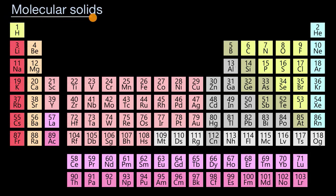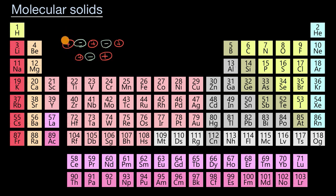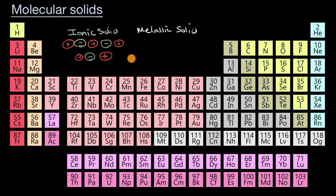Let's talk about molecular solids. As a quick review, we've talked about ionic solids, where ions form lattices — positive ions and negative ions attracted to each other, forming a three-dimensional lattice. We've also seen metallic solids, where metals contribute valence electrons to a sea of electrons, leaving positive cations in that electron sea. Those have properties like good electrical conductivity and malleability.